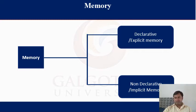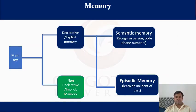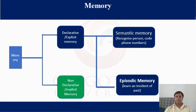First is declarative memory, also called explicit memory, and second is non-declarative memory or implicit memory. Declarative memory is also of two types: semantic memory and episodic memory. Semantic memory includes recognizing persons, places, codes, and phone numbers. Episodic memory involves recalling incidents of the past — past incidents are included in episodic memory.